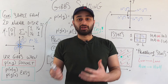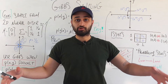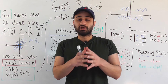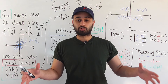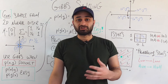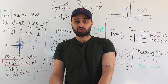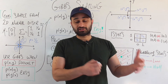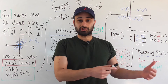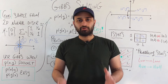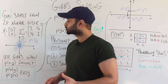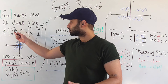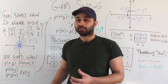Gibbs sampling only really makes sense when you're sampling from a multivariate distribution. In most of our past videos, just to keep the example simple, we've been sampling from single-dimensional distributions with only one variable. Gibbs sampling is useful when you have two or more dimensions. We'll work with the easiest case — a two-dimensional distribution — and our goal is to sample from the two-dimensional normal distribution with mean (0,0) and a simple covariance matrix.